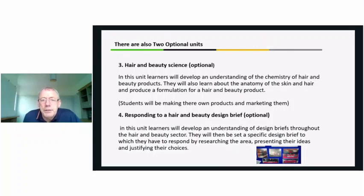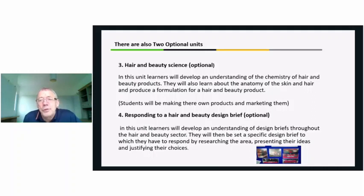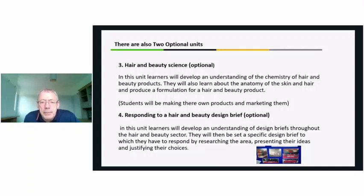Unit three, hair and beauty science, is optional. Learners develop an understanding of the chemistry of hair and beauty products — understanding that many items used on hair and skin can be dangerous if not handled correctly. Unit four, also optional, is responding to a hair and beauty design brief: you are given a brief about the sector and you research that area, present ideas, and justify choices about decisions you make.